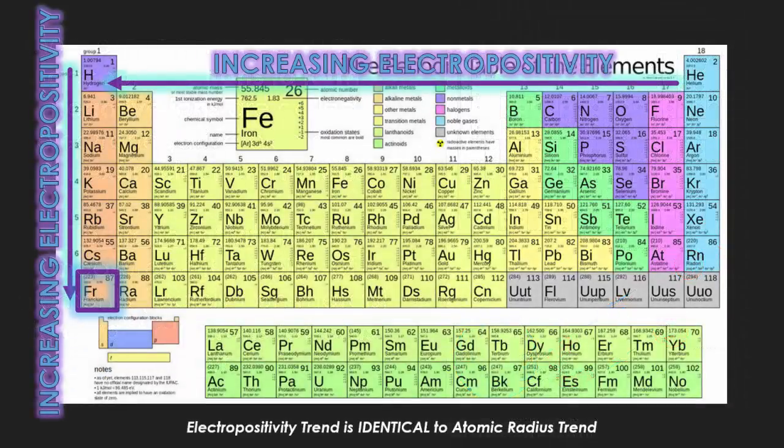When we talk about electropositivity, this trend is identical to the atomic radius trend and opposite to the electronegativity trend. From left to right, going to the right decreases electropositivity, while going to the left increases electropositivity. As you go from the top to the bottom, you're also increasing in electropositivity.